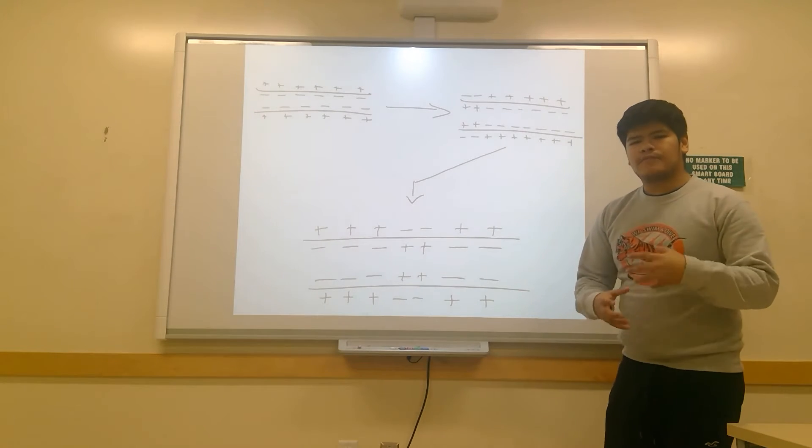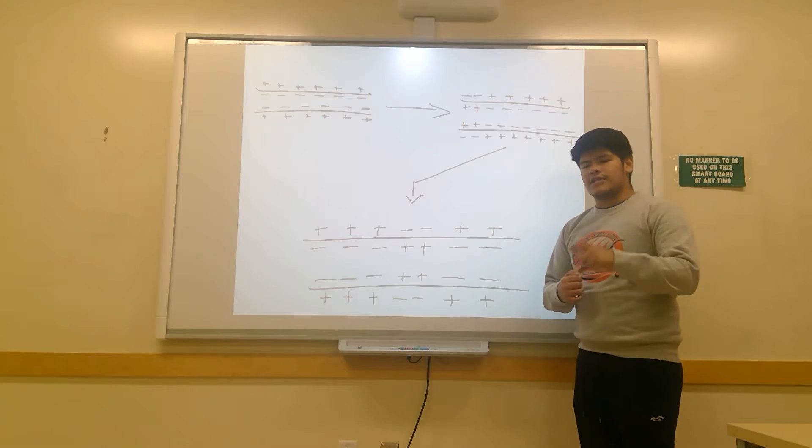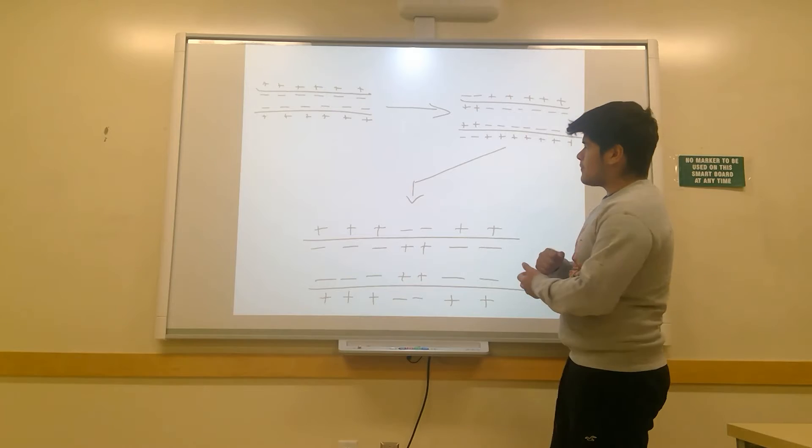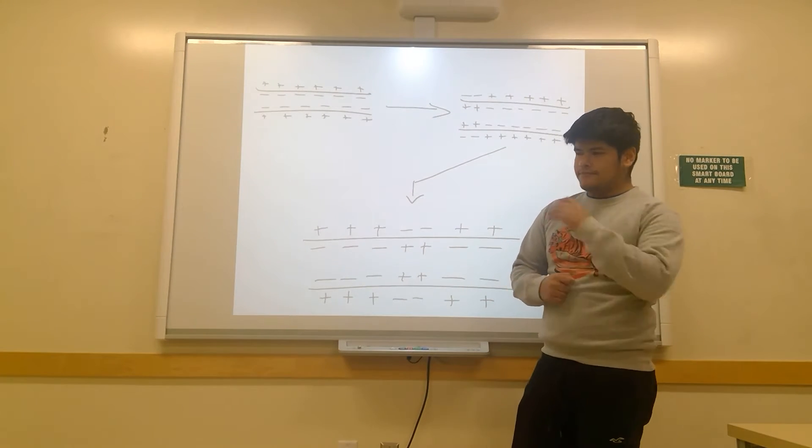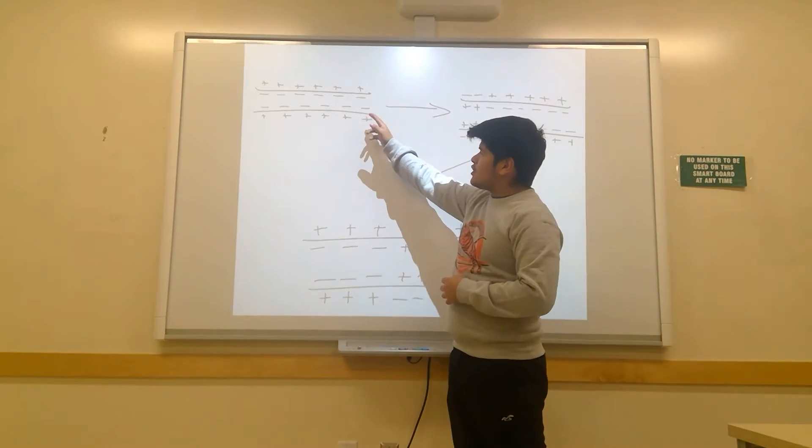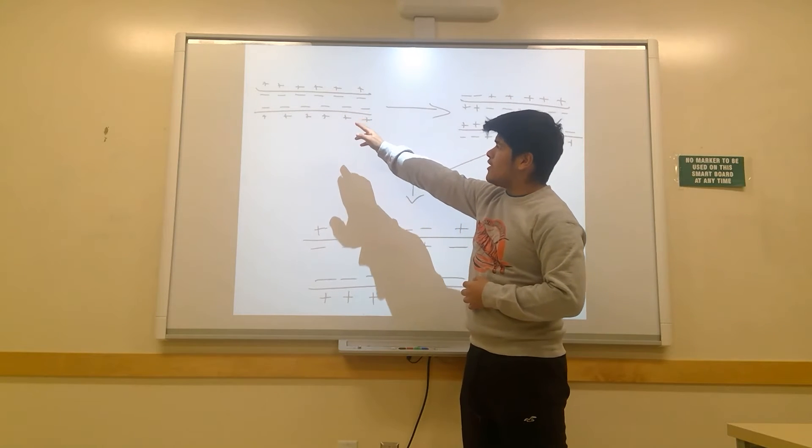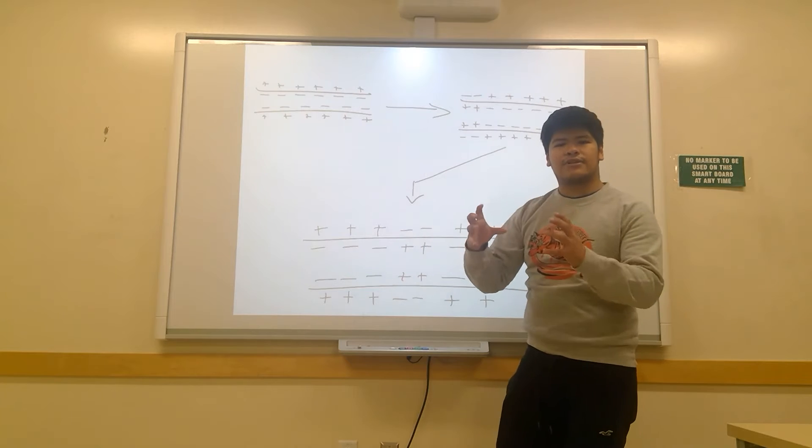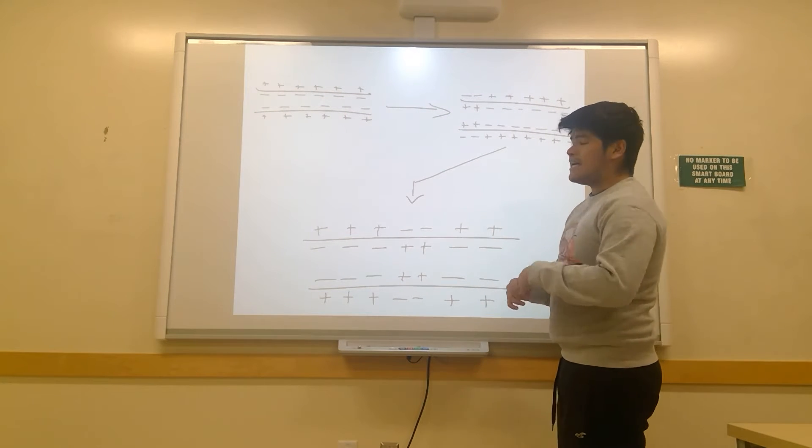Before we talk about what actually happens when there is an action potential, let's talk about what happens when there isn't an action potential. In its resting state, the inside of a neuron is actually negatively charged as shown here. The inside right here is negative. However, its surrounding environment is positively charged.